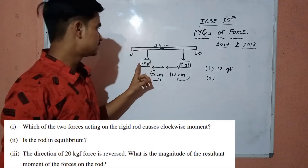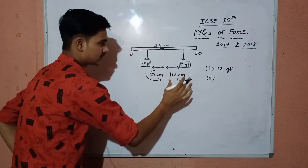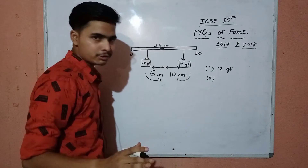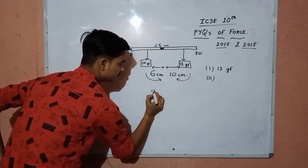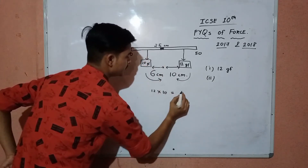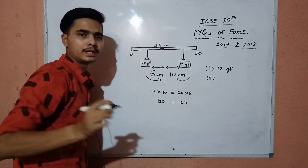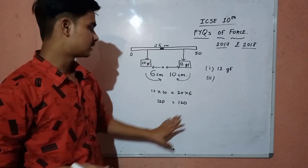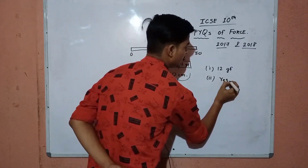The second question asks whether the rod is in equilibrium. Let's do the calculation. If the rod is in equilibrium, total clockwise moment equals total anticlockwise moment. Clockwise moment: 12 gram force × 10 cm = 120. Anticlockwise moment: 20 gram force × 6 cm = 120. Both are equal, so the rod is in equilibrium. The answer is yes, the rod is in equilibrium.